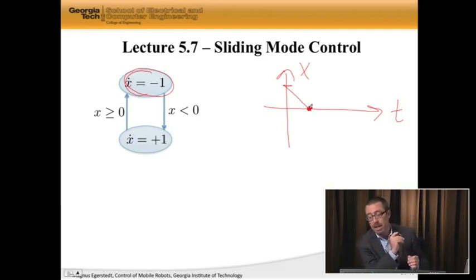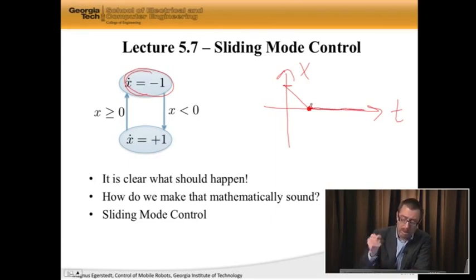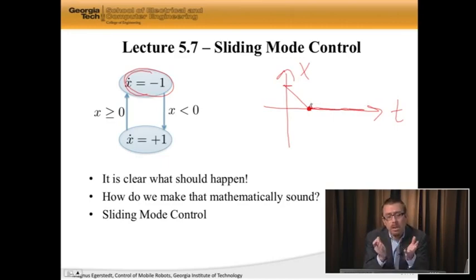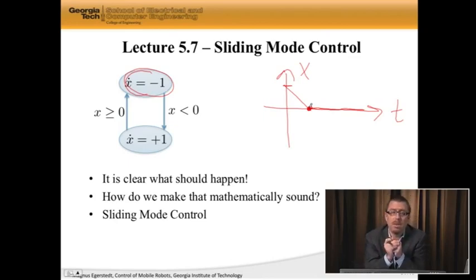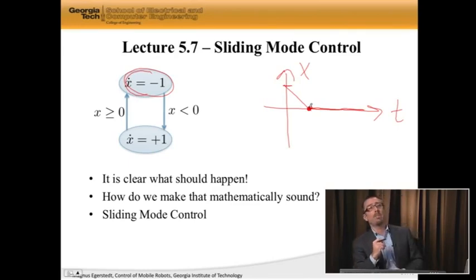It turns out that we can actually remedy this. The reason is it is very clear what should happen: the system shouldn't grind to a halt — it should just nicely keep continuing on, like x is equal to zero. So how do we take this intuitive notion that x should just keep staying equal to zero and make that mathematically sound? That's the topic of today's lecture. This construction by which we can continue beyond the Zeno point in a Type 1 Zeno system is using something known as sliding mode control.